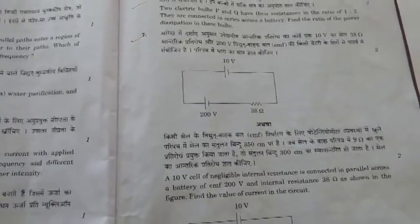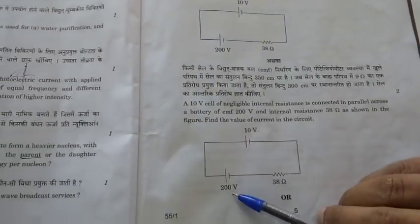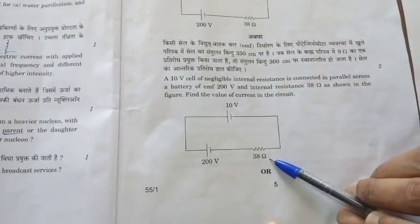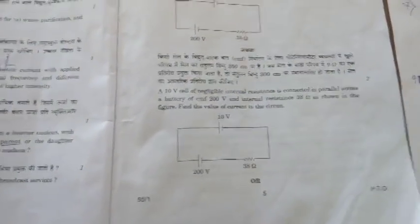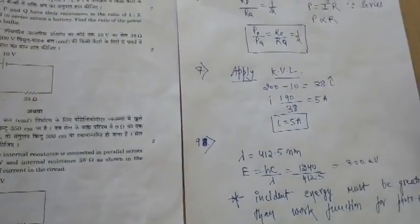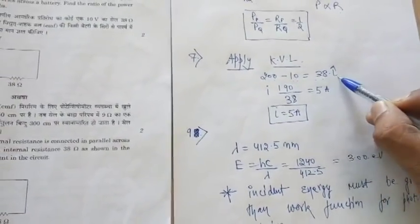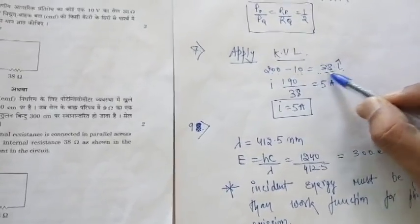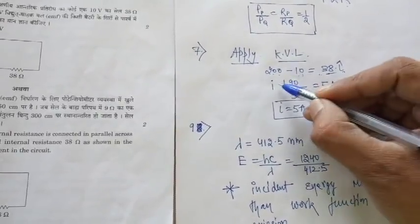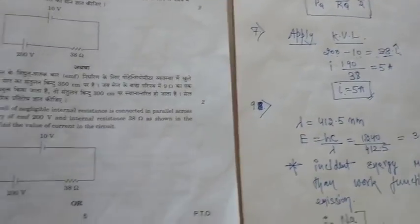Question 7: two batteries of 200 V and 10 V with a resistance of 38 ohms — find the current in the circuit. Apply Kirchhoff's voltage law: the summation of voltages equals the product of current and resistance. So 200 minus 10 equals current times resistance. Solving gives a current of 5 amperes.